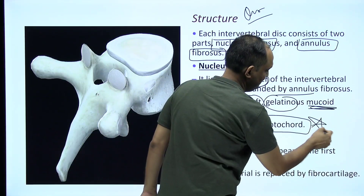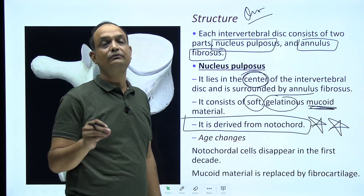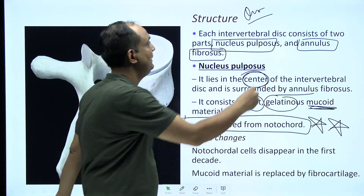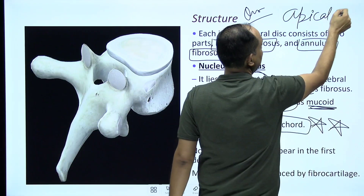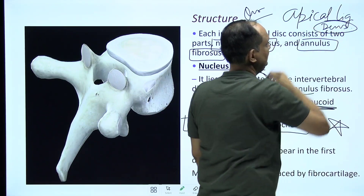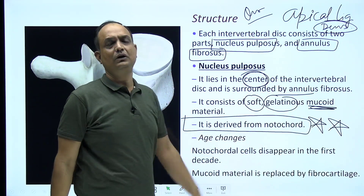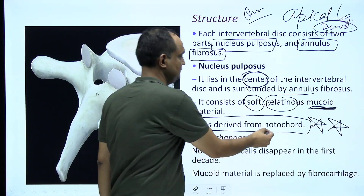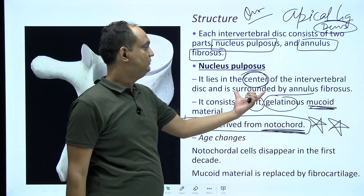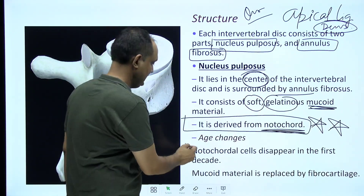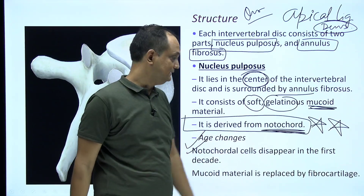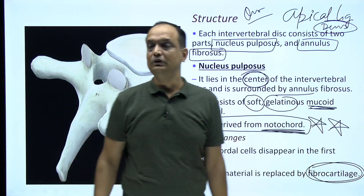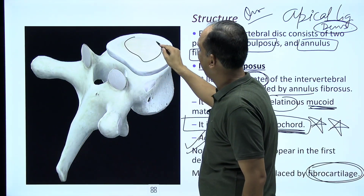The nucleus pulposus is a soft, gelatin-like mucoid material, and it is derived from the notochord. This is an important exam question: what are the derivatives of the notochord? One derivative is the nucleus pulposus, and another is the apical ligament of the dens. The dens is another name for the odontoid process. As age advances, notochord cells disappear in the first decade and the mucoid material is ultimately replaced by fibrocartilage.